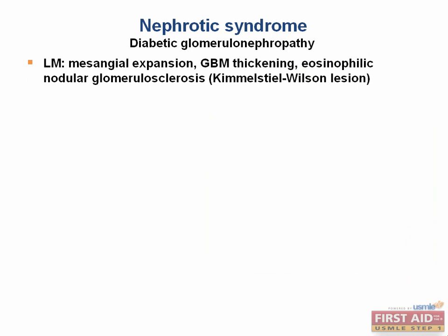Let's discuss diabetic glomerulonephropathy. Diabetes is the most common cause of both chronic kidney disease and dialysis in the United States. The disease results from high blood glucose leading to non-enzymatic glycosylation of the glomerular basement membrane and efferent arterioles, meaning glucose molecules start binding to proteins in the basement membrane. The glomerular basement membrane will thicken while the mesangium will expand, contributing to the pathognomonic finding: the Kimmelstiel-Wilson lesion, which is the diffuse pink glomerulus that looks like a nodule.